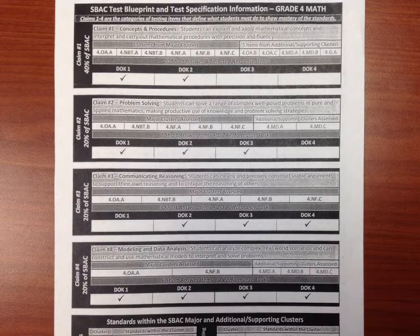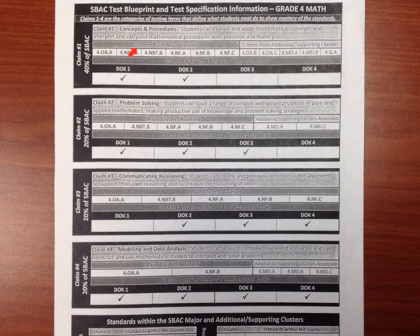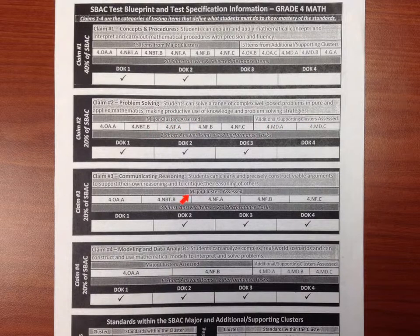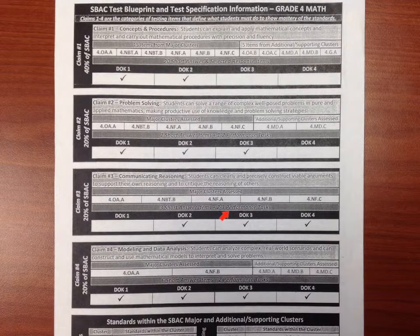Then you look at the major cluster items. The cluster items are separated by major clusters on the left and additional or supporting clusters on the right. So 15 of the items are major clusters and 5 of the items are additional or supporting clusters, and you can see that repeated throughout. In one section it's all major clusters with only three short answers and two to three performance tasks. At the end, claim 4 also shows major clusters and additional clusters.